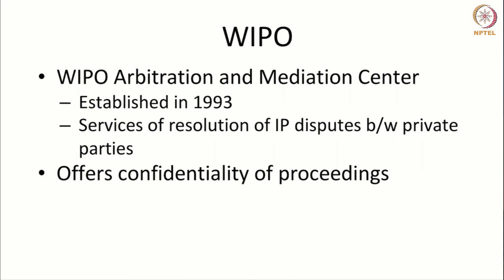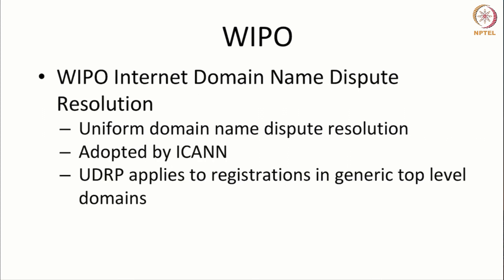The WIPO World Intellectual Property Organization has an arbitration and mediation center which was established in 1993. It offers services for resolution of IP disputes between private parties and also offers confidentiality of proceedings. WIPO also has an internet domain name dispute resolution method, which is adopted and implemented by ICANN. Disputes with regard to registrations at the generic top level domain can be resolved before the WIPO internet domain name dispute resolution center.